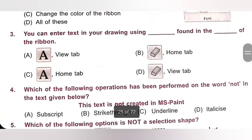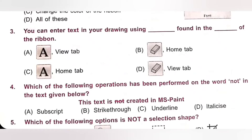Question 3: You can enter text in your drawing using dash found in the dash of the Ribbon. Options: A. Text, View Tab. B. Eraser, Home Tab. C. Text, Home Tab. D. Eraser, View Tab. You can enter text in your drawing using the Text icon found in the Home tab of the Ribbon. Option C is the correct answer.